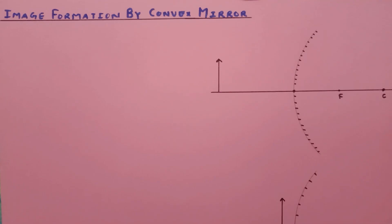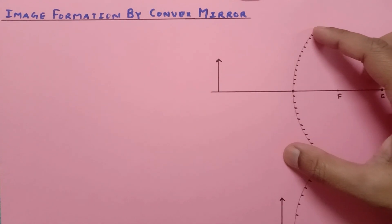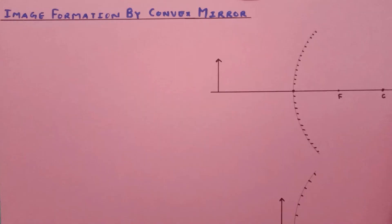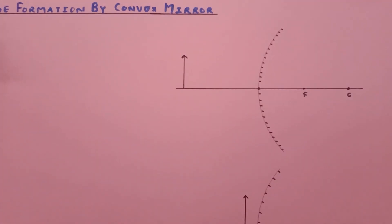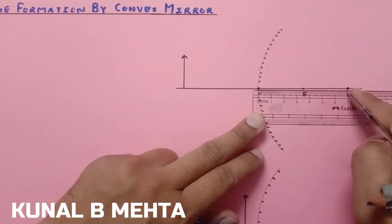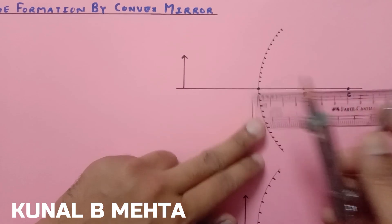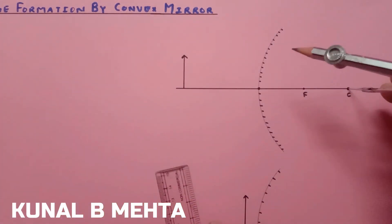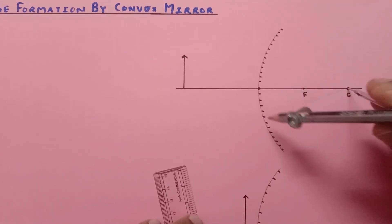Today I'm going to discuss image formation by convex mirror. Here is a convex mirror — this is a diverging mirror. I drew this convex mirror by taking the radius of curvature as 7 centimeters, so the distance from the pole to the center of curvature is 7 centimeters. Taking this distance and that point as center, I drew the convex mirror.